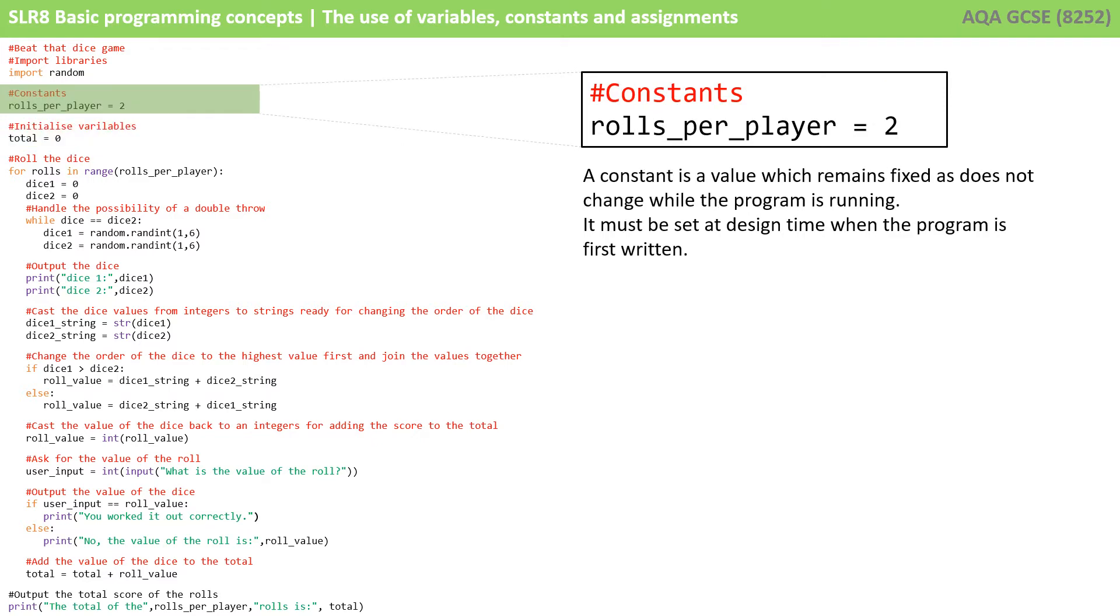Here we see an example of a constant. Roles per player equals two. And it looks exactly the same as our variable in Python. Now, a constant is a value which remains fixed and does not change while the program is running. So we must set it at design time when the program is first written. Now, the reason it looks identical here to the previous line of code we looked at is that Python doesn't actually support constants. If we wanted to implement constants in a Python program, we would have to set a value like we have here, roles per player equals two, and then we would have to make sure we never actually changed it. In most programming languages, you could actually declare this as a constant and it would be unable to be changed during program execution.